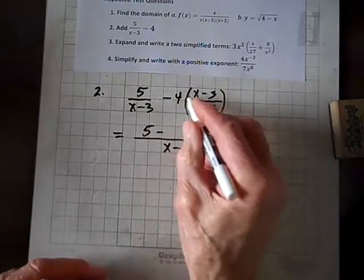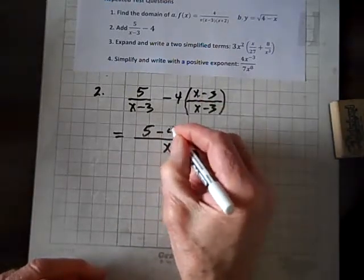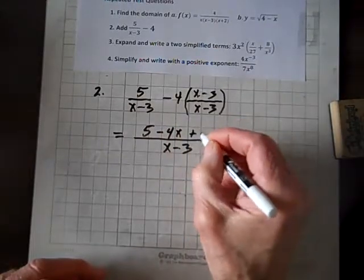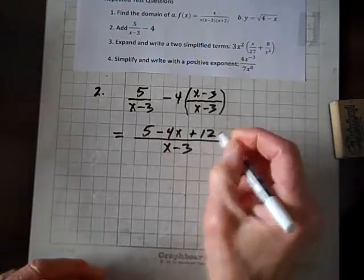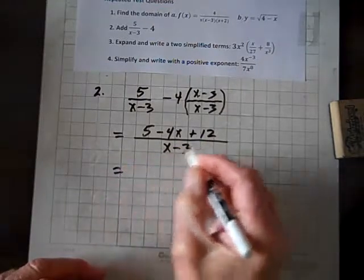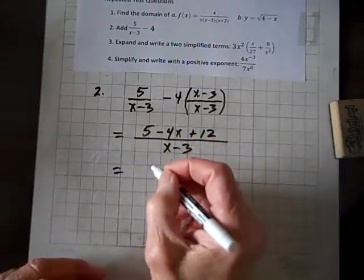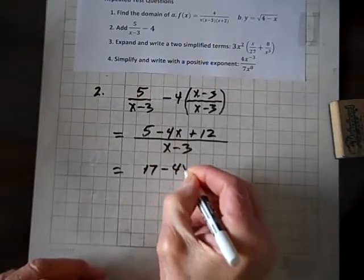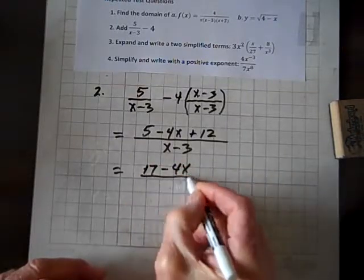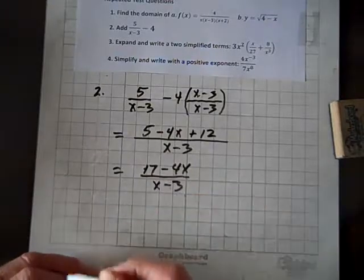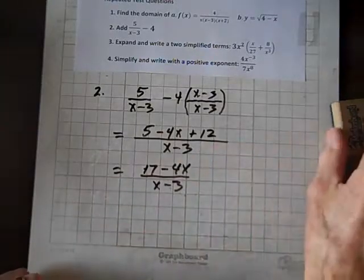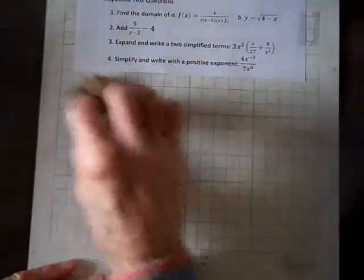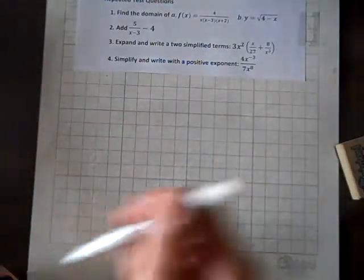And minus four times x is minus 4x. Minus four times negative three is a plus twelve. And so what do we get? Well, five plus twelve is seventeen minus 4x over x minus three. And that question is a sure thing, many times.